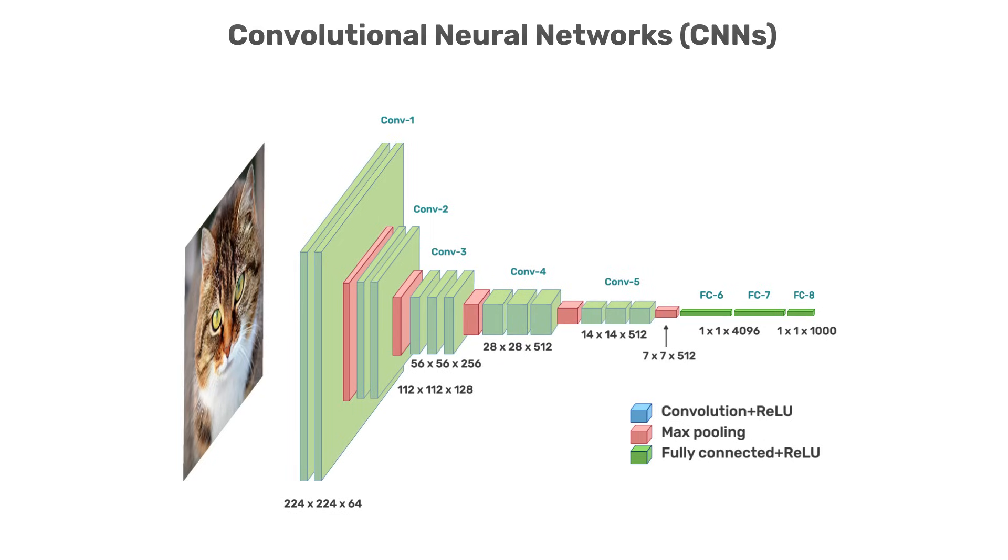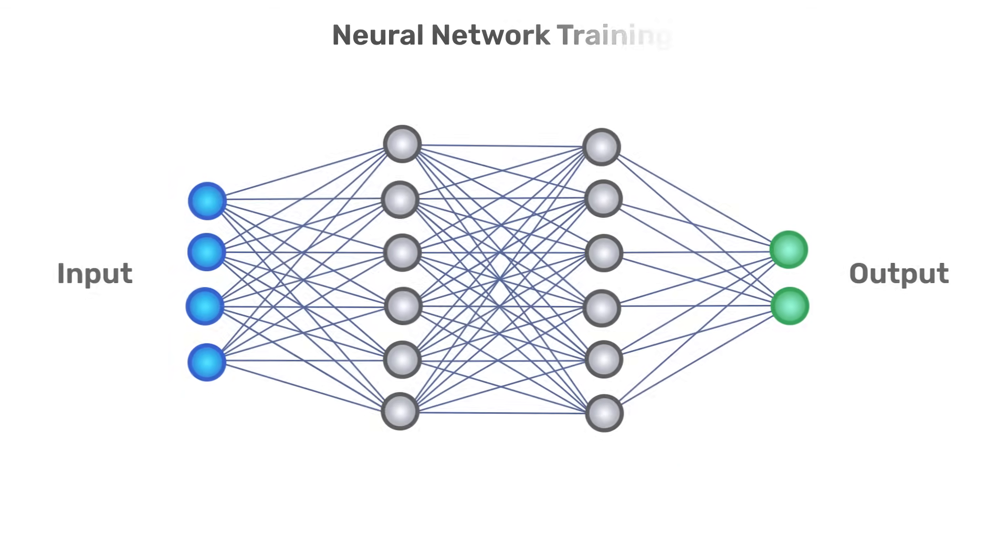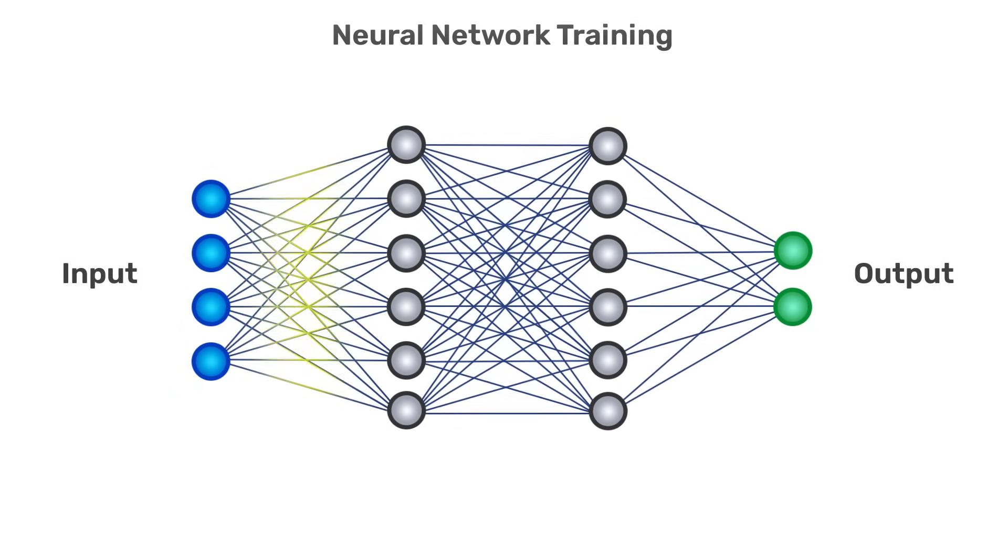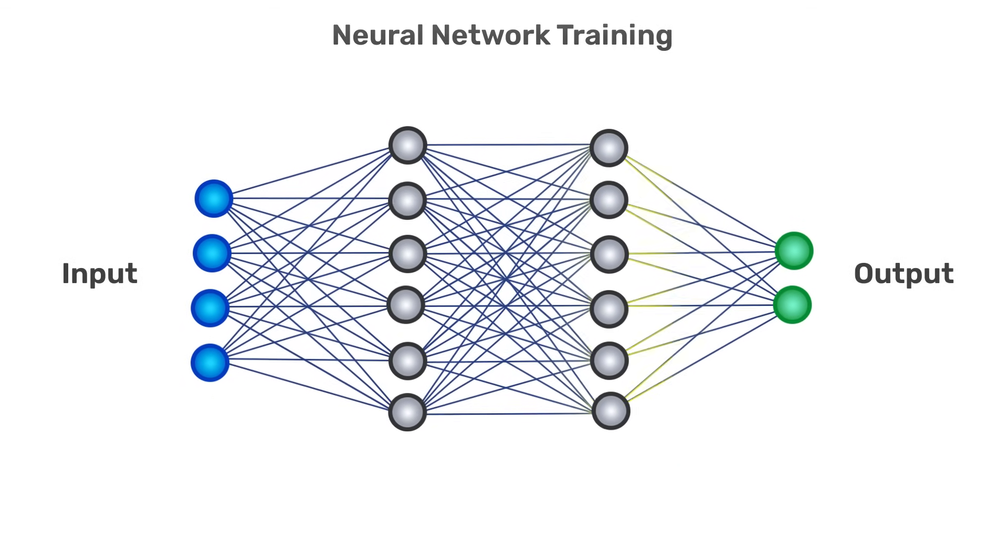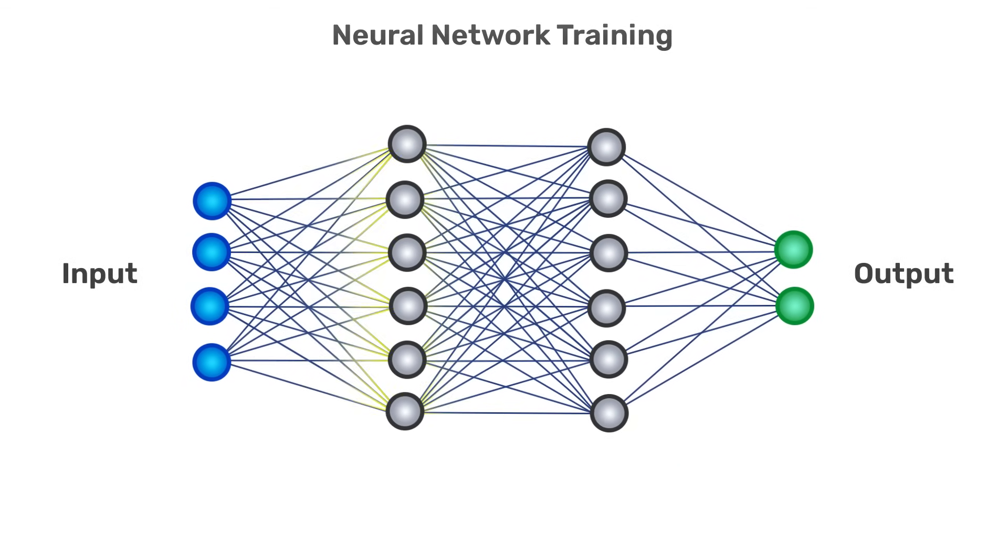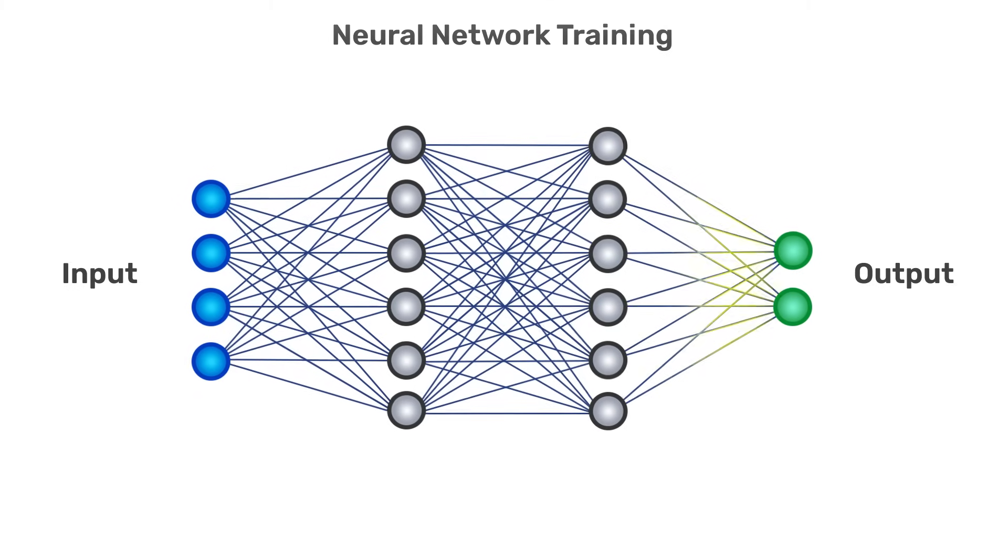In a convolutional neural network, there's one important distinction. And that is that the values of the kernel are learned by the network during the training process. So rather than trying to engineer what kernel to use for a specific problem, a CNN will automatically learn those values during the training process.